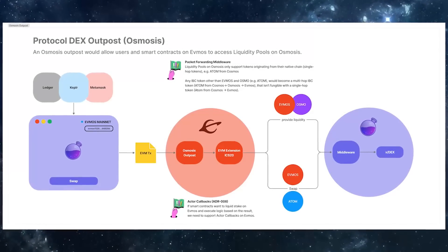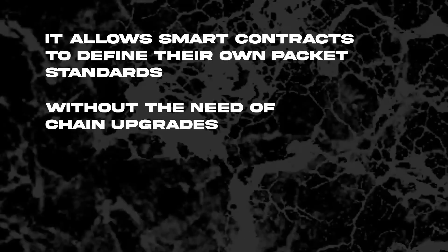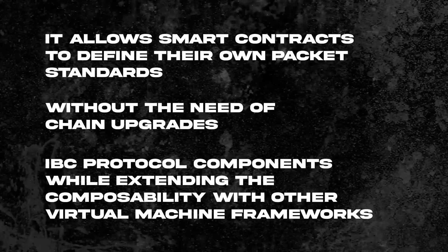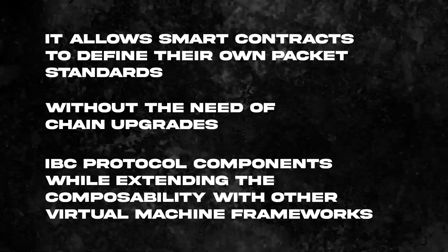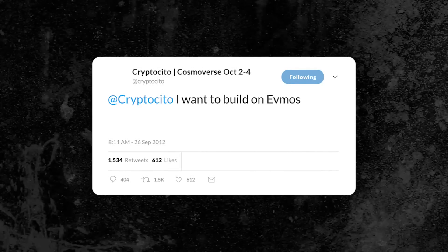Another technical innovation FMOS 2.0 brings is dynamic IBC, also enabled through EVM extensions, and it's going to be released quite soon. It allows smart contracts to define their own packet standards without needing chain upgrades, and it utilizes IBC protocol components while extending composability with other virtual machine frameworks like CosmWASM, Solana, or Polkadot. If you're a builder, feel free to drop a comment or text me on Twitter at Cryptocito and I can connect you directly with the team.